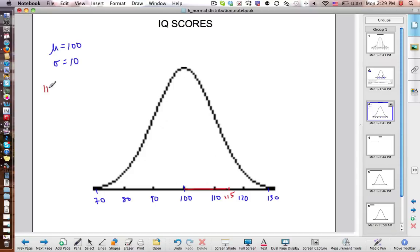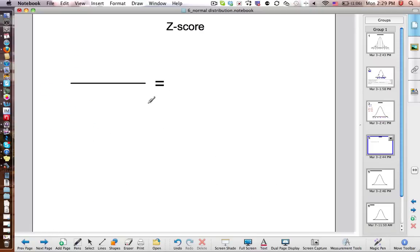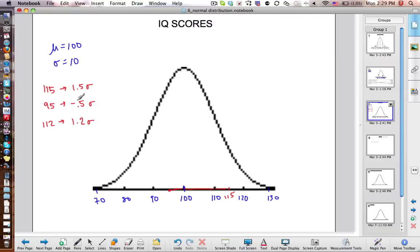So 115 corresponds to 1.5 standard deviations. What about 95? That would be right here, 95. That's negative 0.5 standard deviations. What about 112? That's one, and then just a 0.2 there is 1.2 standard deviations. So those are called Z scores. And Z scores literally means standard deviation.